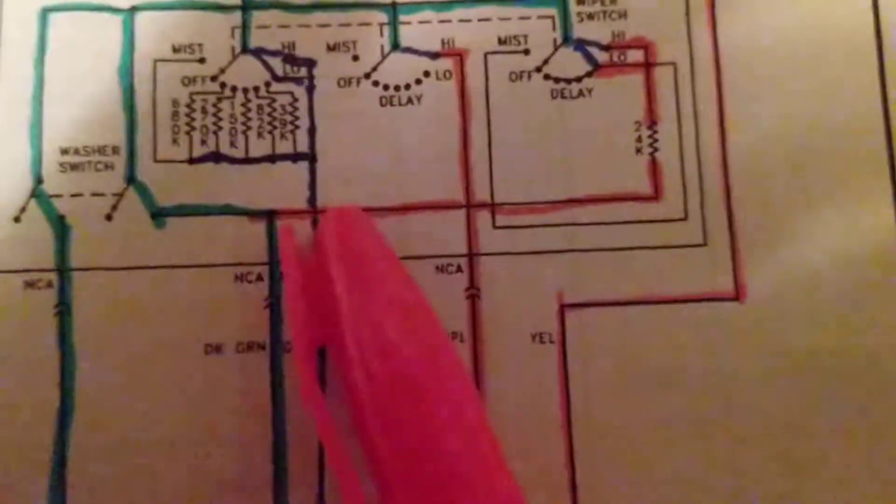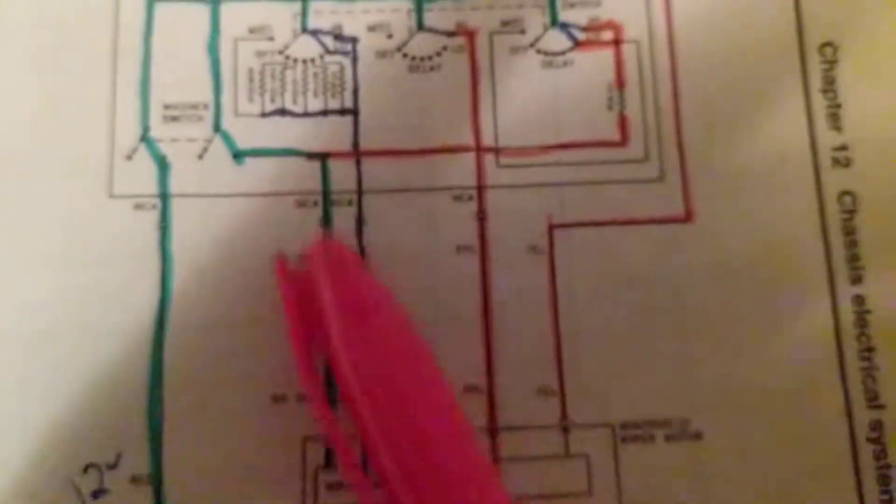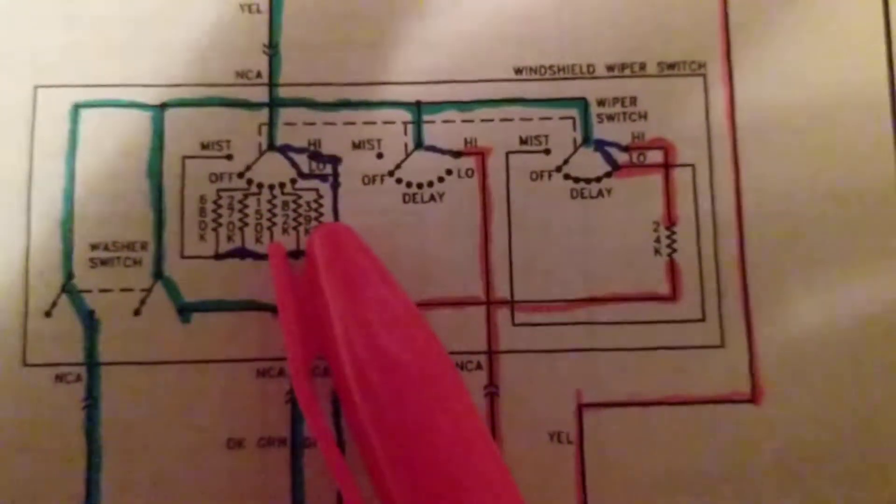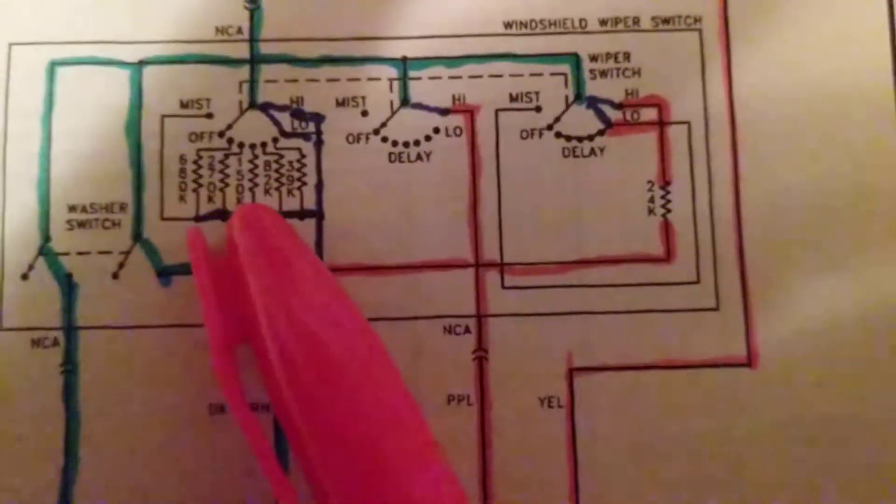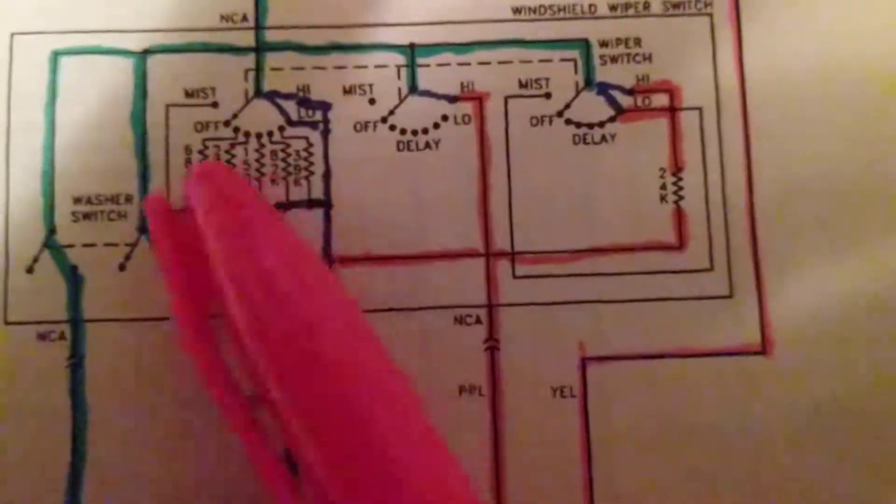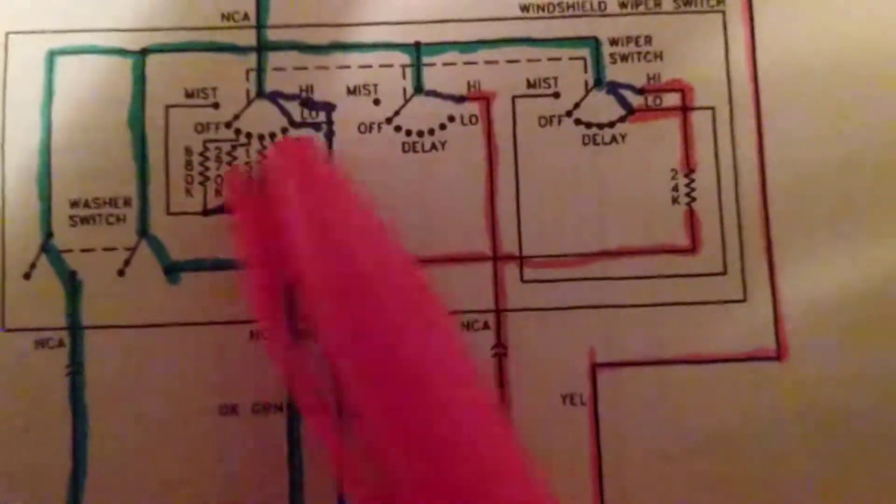Going through here, going through here, and also going through here through this control line. So therefore, from these resistors, you can control the speed of the wiper motor.